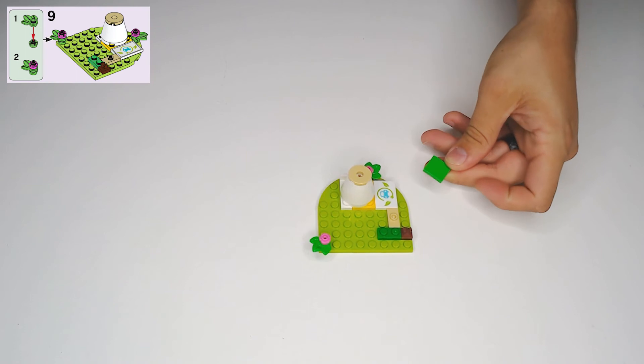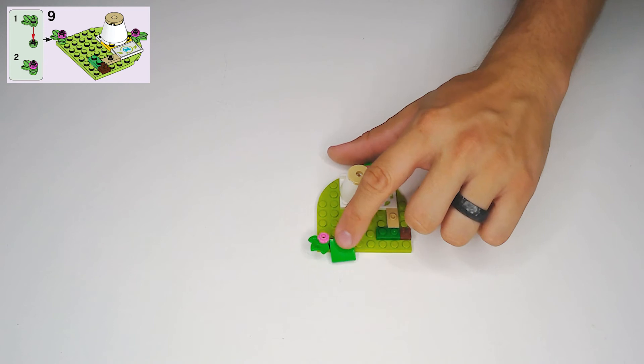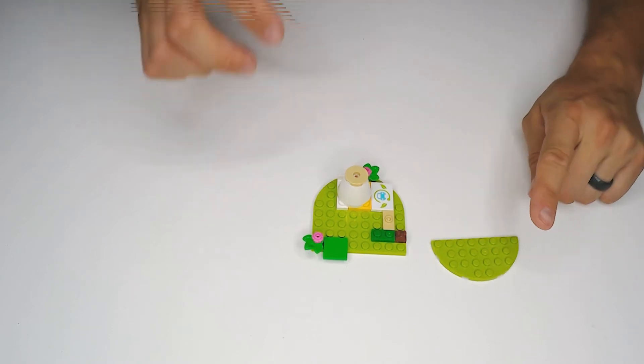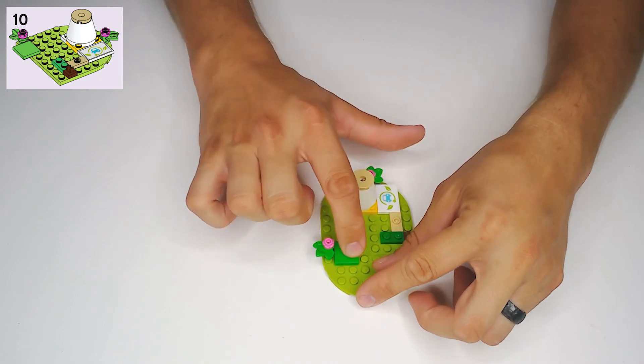And then step ten, grab a green two by two tile, and we're going to put it kind of over there, it's going to be half hanging off of the other plate, okay, so right next to the right there, hanging off the side. Then in step eleven, grab this other green half circle plate, and it's going to go in here, it's going to clip on with the rest of that dark green tile that you just put on.